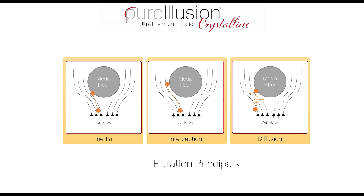Interception of a particle occurs on smaller particles — those that are carried by the airflow floating around the media fibers. When a particle is small enough to be carried by the airflow but large enough to be intercepted between the edge of the airflow and the media fiber itself, the particle becomes trapped by the interception filtration principle.